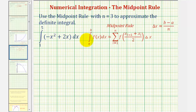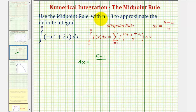Let's begin by determining the width of each subinterval, which is equal to delta x, which is b minus a divided by n, where a and b are the limits of integration. So delta x is equal to five minus one divided by three, so the width of each subinterval is going to be four-thirds of a unit.